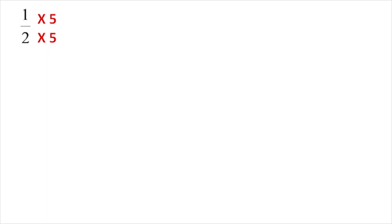We multiply by 2 to get denominator 10, making it a 1-digit decimal. The decimal point gives us 0.5 for 1/2 — wait, the decimal point is at the 5 position, giving 0.5.